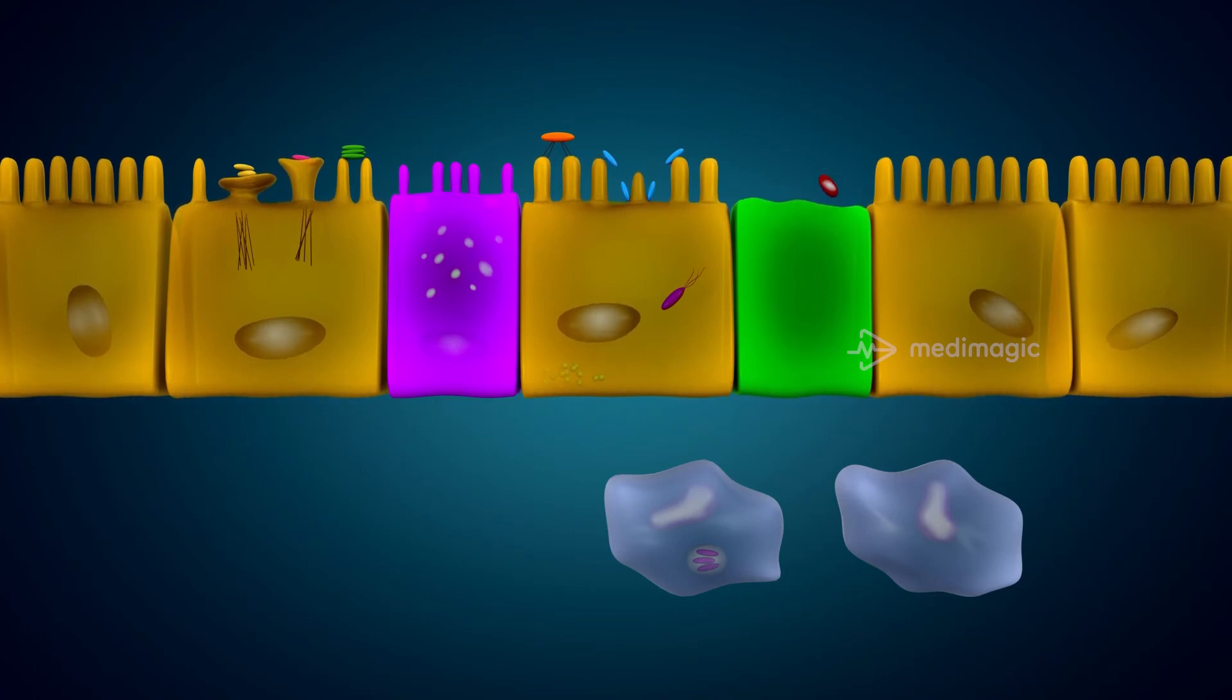Enteroinvasive E. coli are intracellular pathogens that penetrate the intestinal cells. These M cells are specialized epithelial cells which transport the bacterial antigens from the lumen to the immune cells by transcytosis. EIEC escapes submucosal macrophages by induction of macrophage cell death followed by basolateral invasion of colonocytes and lateral spread.